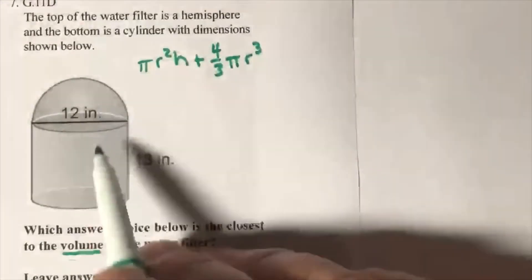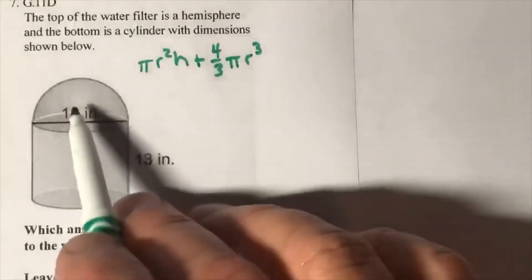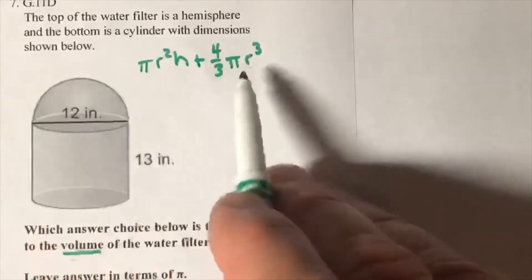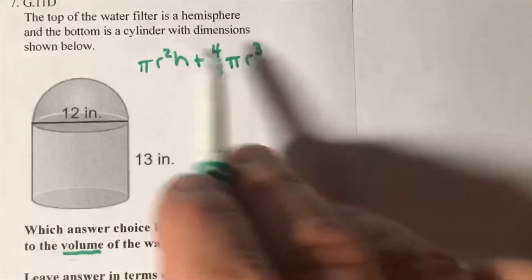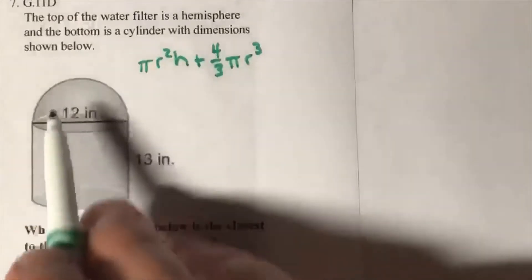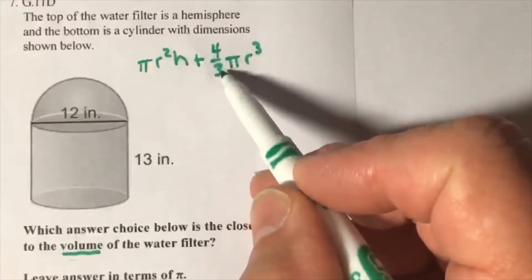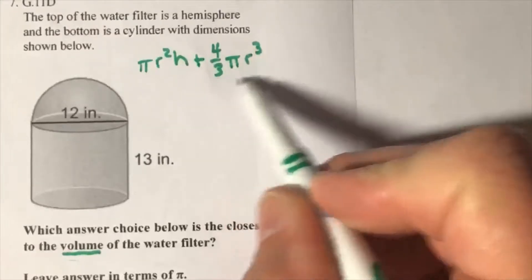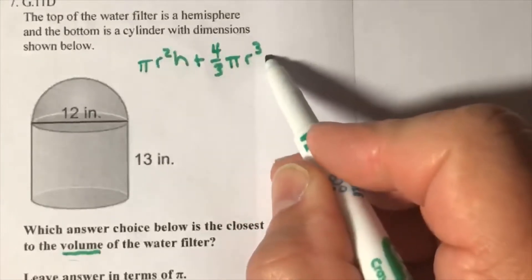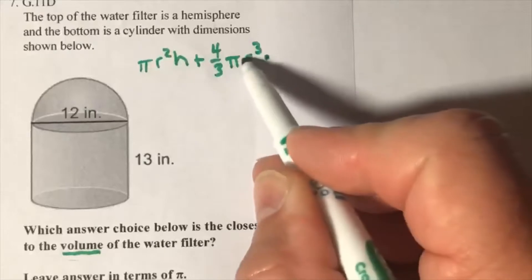Now the cylinder is a full cylinder, it's not cut in half. The sphere, the hemisphere - the formula for the sphere, this is half a sphere, a hemisphere. So you can either, because this is a fraction, take this whole thing and divide by two, or let's multiply.